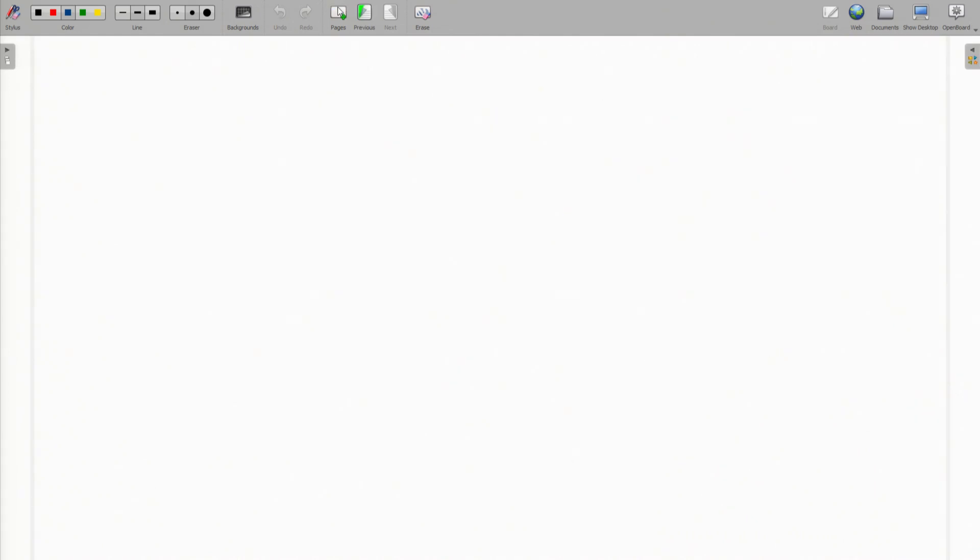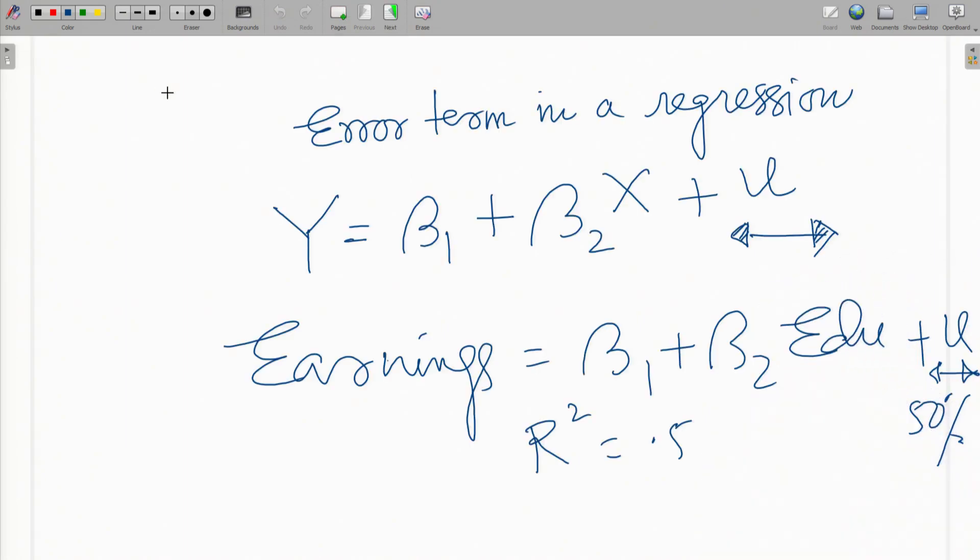In the previous regression equation where you spoke about earning as an outcome of education, let's say you also introduce some other explanatory variable, for example, experience. If we run a regression we will see that the R-squared value is improving because experience is something that accounts for your earnings.